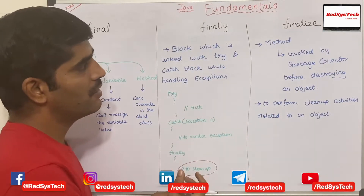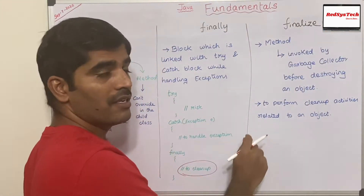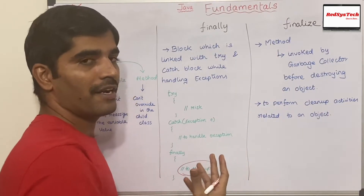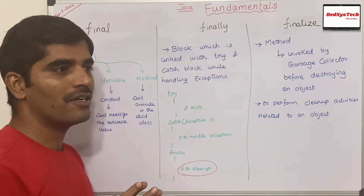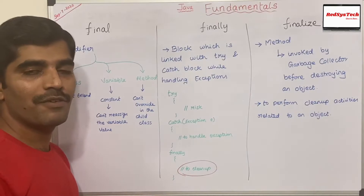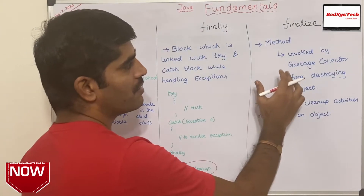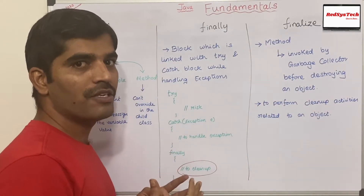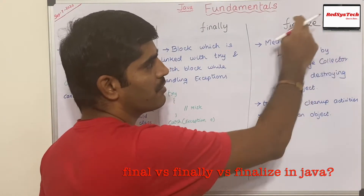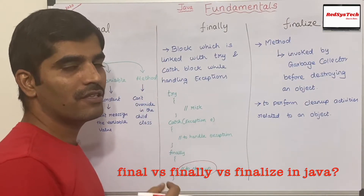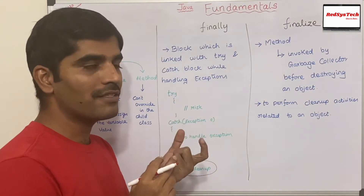Now let's move on to finalize. Finalize is a method — basically it is related to the garbage collector. If you know what an object and garbage collection are, I have given a detailed explanation about garbage collection in Java in a separate video. Basically, whenever the garbage collector wants to collect objects that are not referenced by any object reference, at that time it is going to invoke this particular method — the finalize method. This finalize method is internal to the Object class.